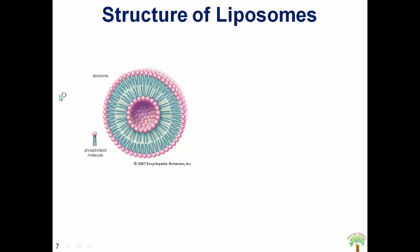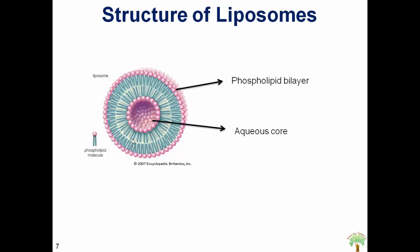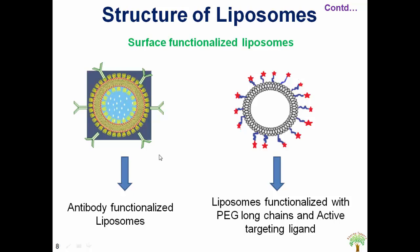This is the structure of the liposomes. It shows a bilayer on the surface, which is called the phospholipid bilayer, and an aqueous core inside. These are surface-functionalized liposomes — this is an antibody-functionalized liposome, and this is a liposome functionalized with PEG and active targeting ligand.